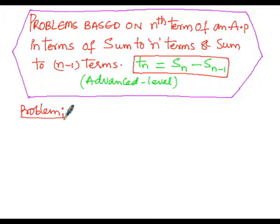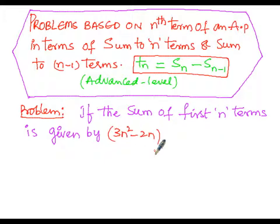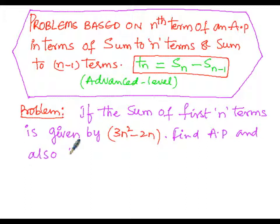If the sum of first n terms is given by 3n² minus 2n, we have to find the arithmetic progression — that is the sequence — and also the 20th term, which is t(20).